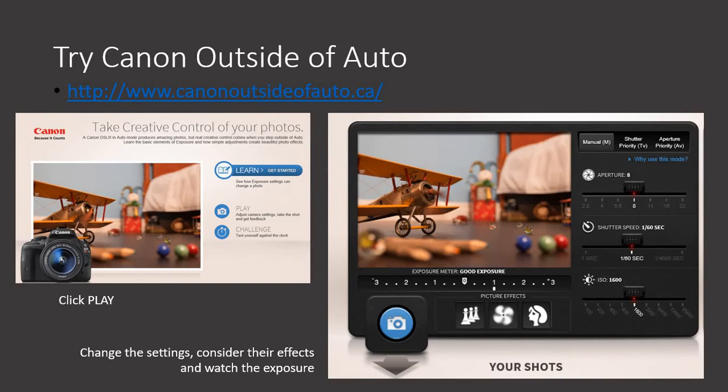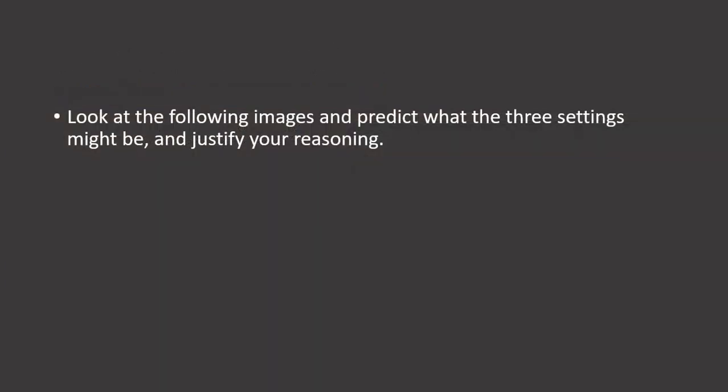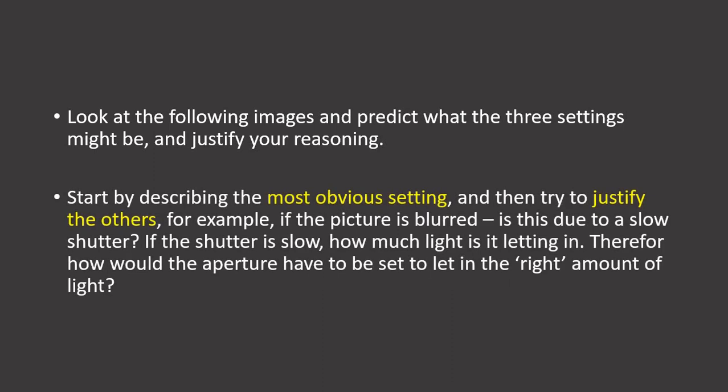For the following images that come up, let's see if you can predict what the three settings might be and then justify your own reasoning. Start by describing the most obvious settings and then try to justify the others. For example, if the picture is blurred — is it due to a slow shutter? If the shutter is slow, how much light is it letting in? Therefore, how much would the aperture have to be set to let in the right amount of light to make the image balanced?